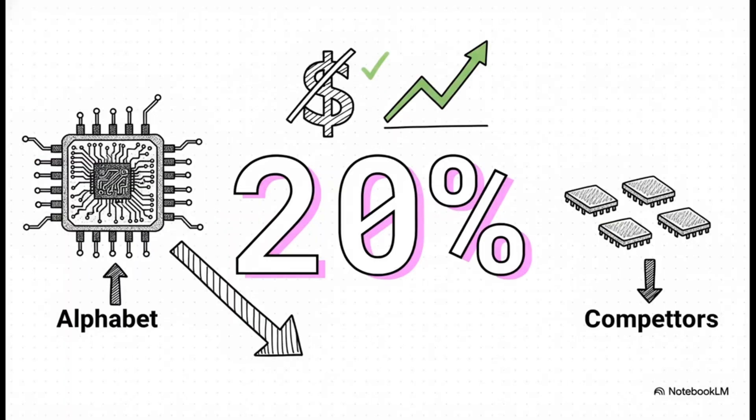So, what's the result of owning that whole supply chain? Well, this number is just staggering. The analysis says that Alphabet's in-house advantage lets it get computing power at a cost that is just 20% of what competitors pay when they have to rely on NVIDIA's chips. That is a massive, game-changing cost advantage.